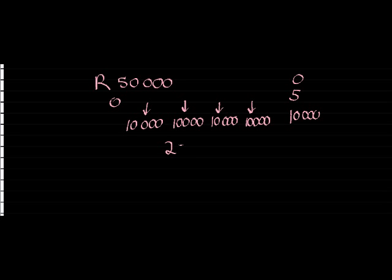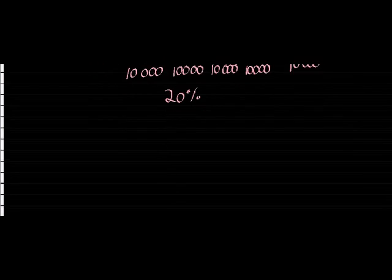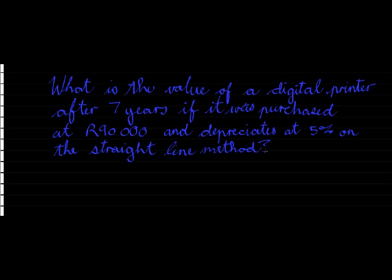Which means it's 20%. Your depreciation rate for tax purposes is 20%. But let's just do one simple example to illustrate the basics. What is the value of a digital printer after 7 years if it was purchased at 90,000 Rand and depreciates at 5% on the straight line method?